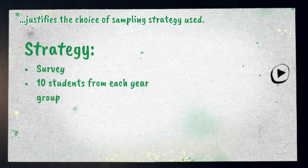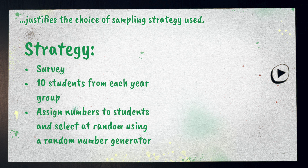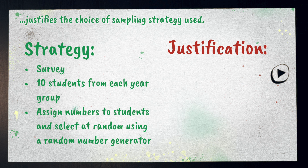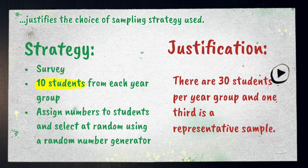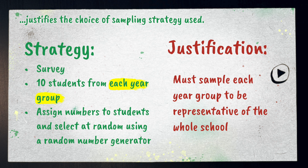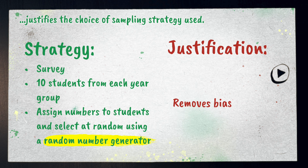Maybe you decide it's best to use a survey and ask 10 students per group to fill it out. To choose them, assign numbers to each student and select them at random using a random number generator. The justification for using a survey is that they're cheap, convenient, and easily shared. You're using 10 students per year group because there are 30 students in a year group and one third is a good representative sample. You must sample each year group to be representative of the whole school, and choosing students using a random number generator removes any bias in selection.